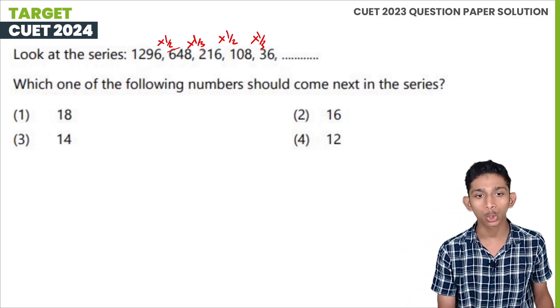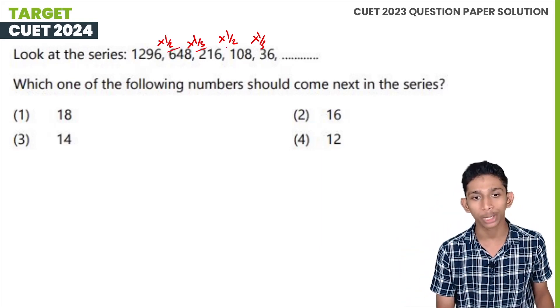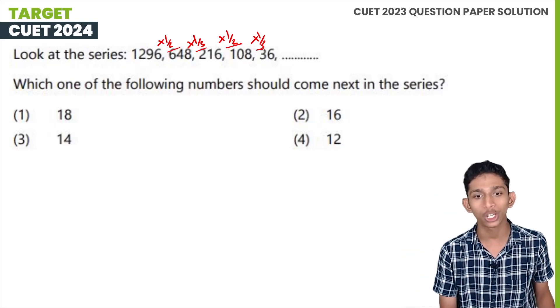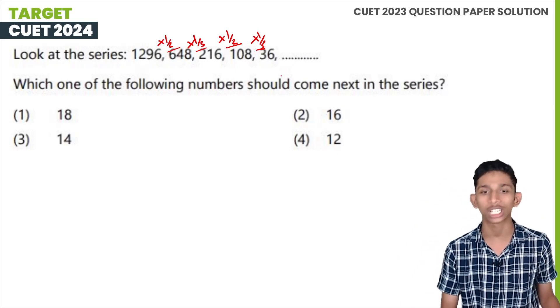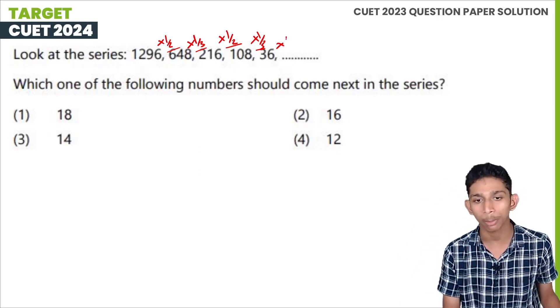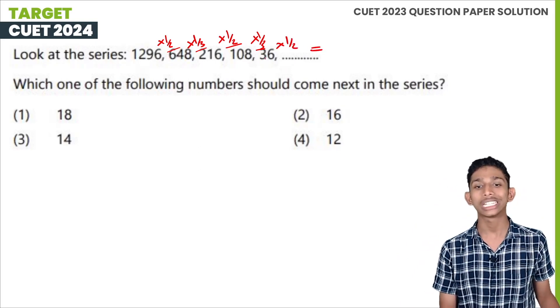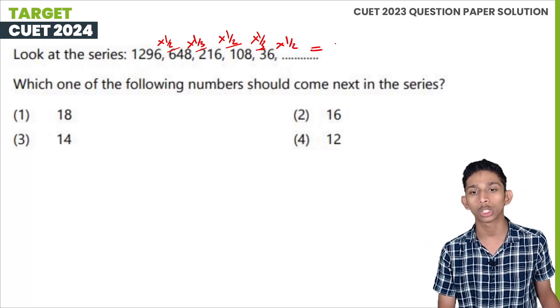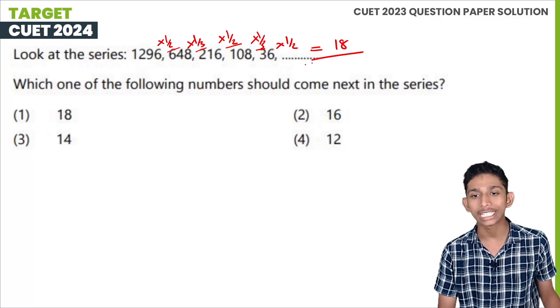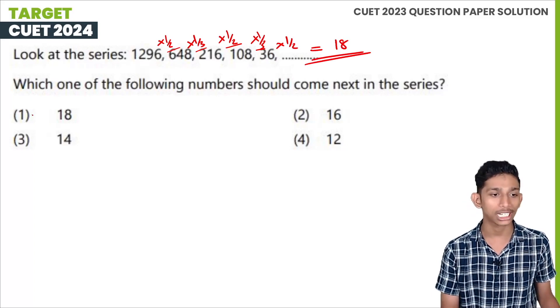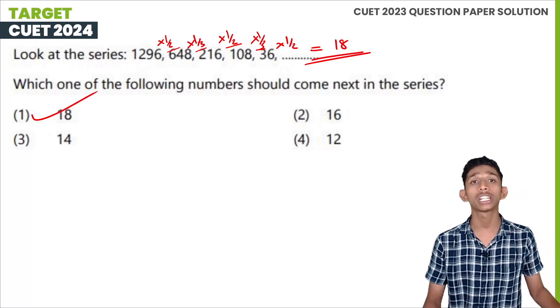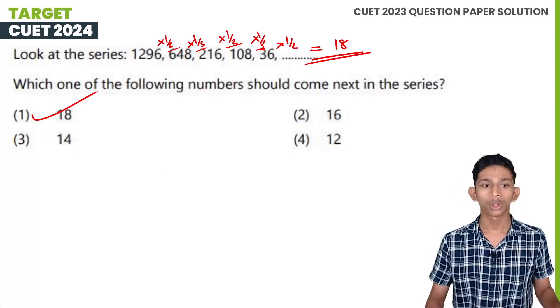The pattern is: divide by 2, then divide by 3. The first term divided by 2, then divided by 3. The second divided by 2 equals 36 divided by 2. The next divided by 3 is 18.